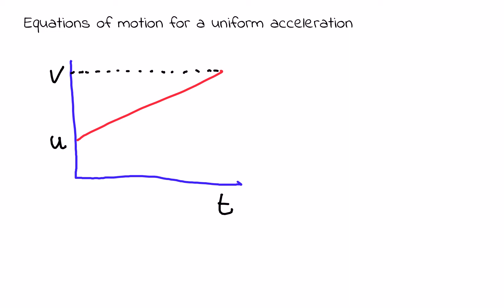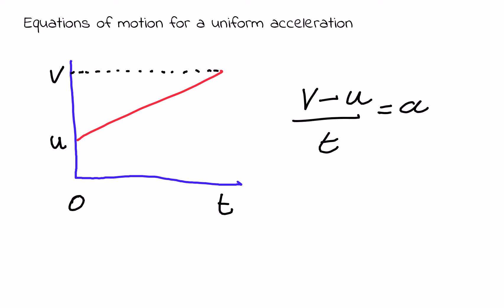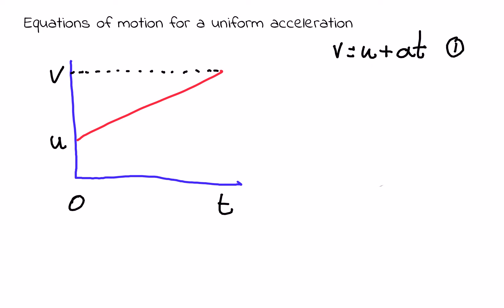The first thing we're going to look at is acceleration. We should know that acceleration is defined as the rate of change of velocity. So on this graph, the acceleration is the gradient of the line. We work out gradients by the difference in y divided by the difference in x. Here, the difference in y is v minus u, and the difference in time from zero to t is t. So our acceleration a equals (v minus u) over t, which rearranges to v equals u plus at.